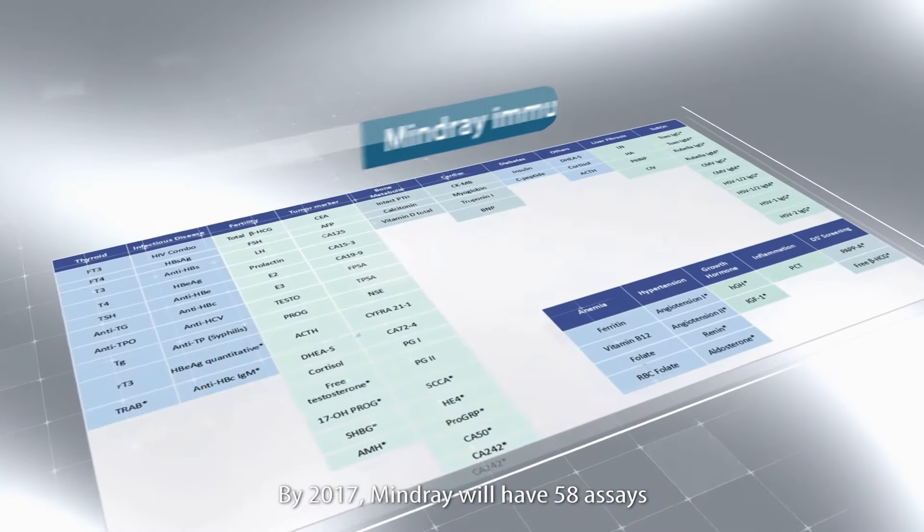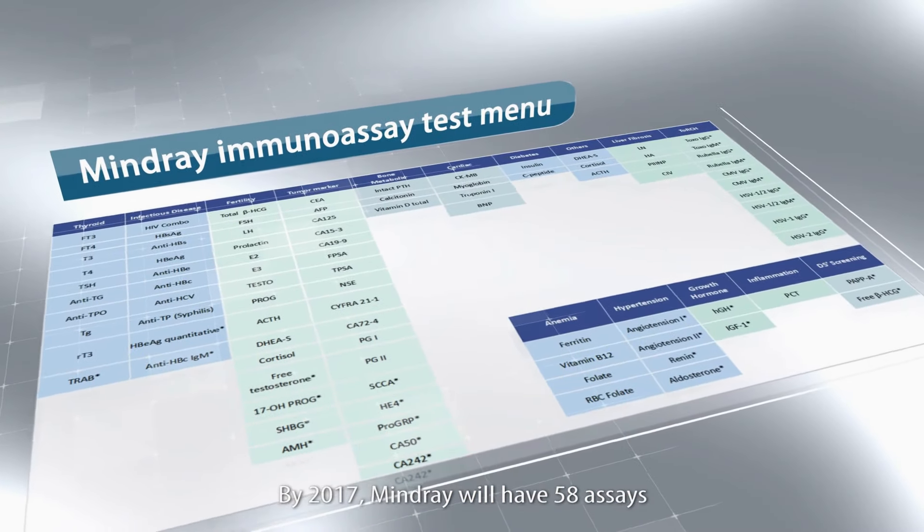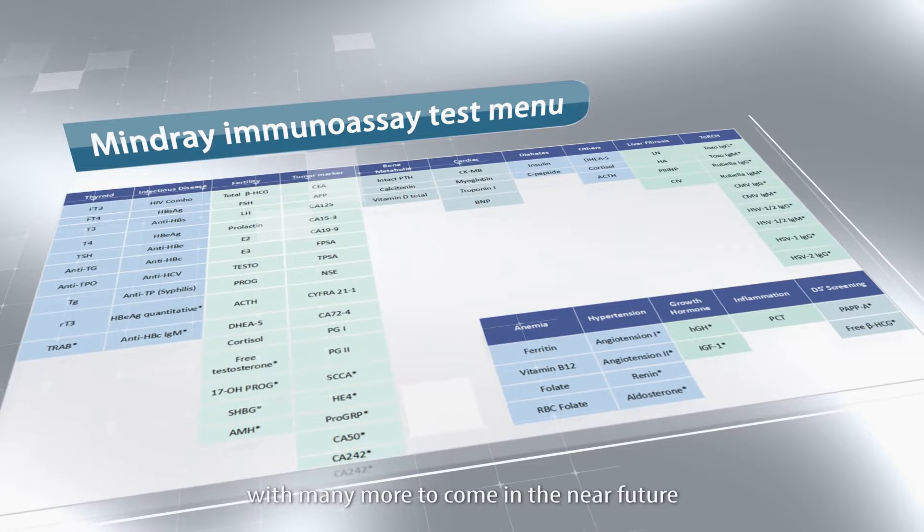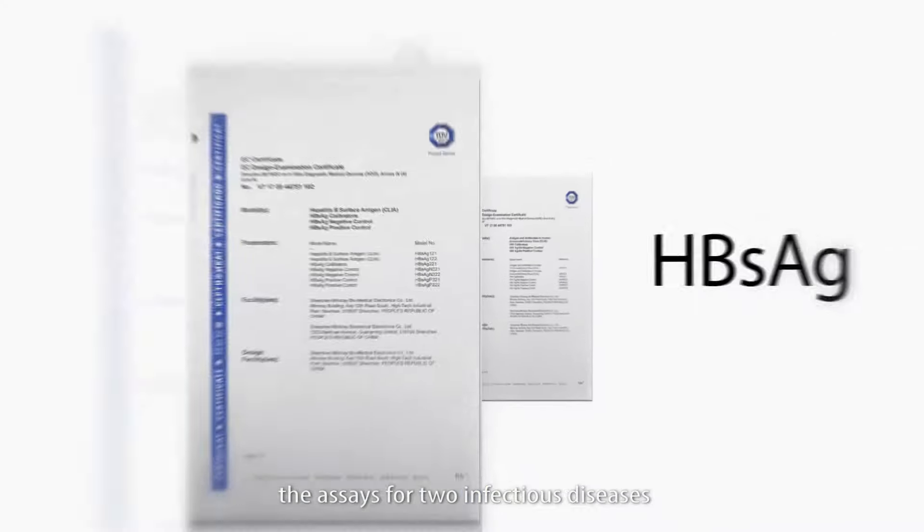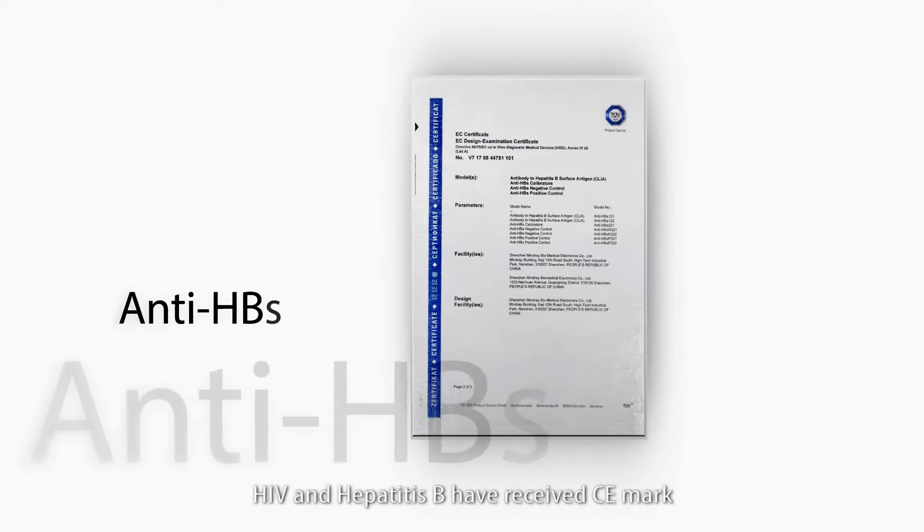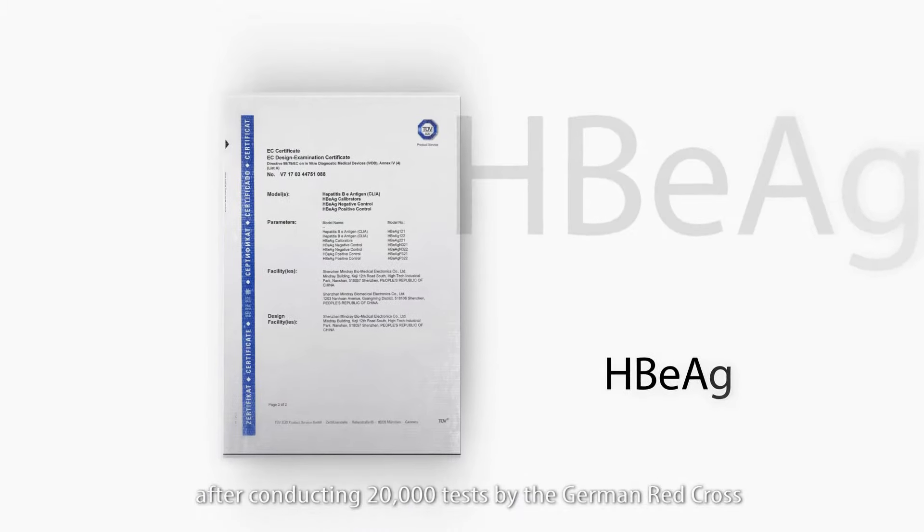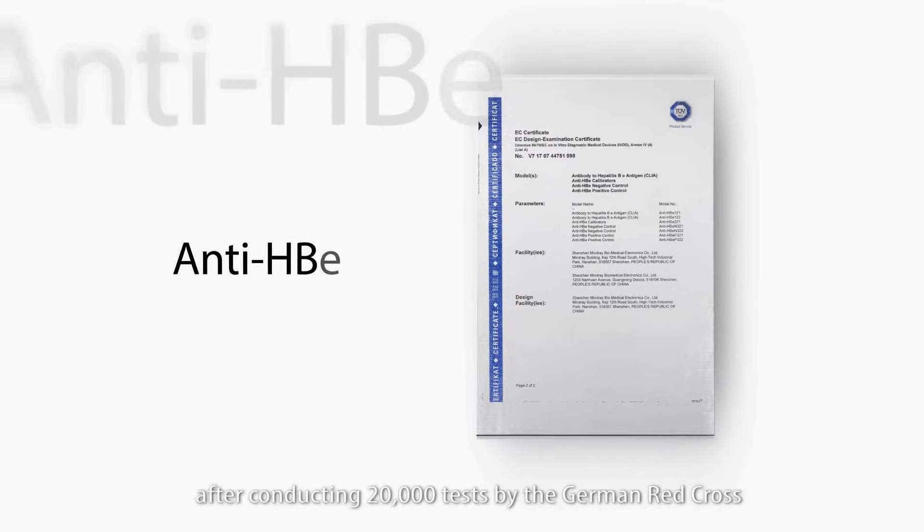By 2017, Mindray will have 58 assays with many more to come in the near future. The assays for two infectious diseases, HIV and Hepatitis B, have received CE mark after conducting 20,000 tests by the German Red Cross.